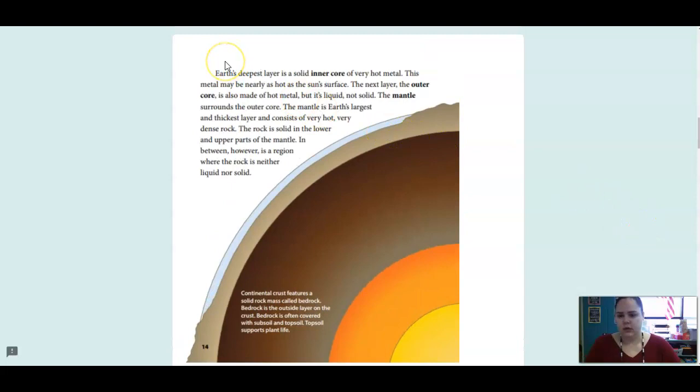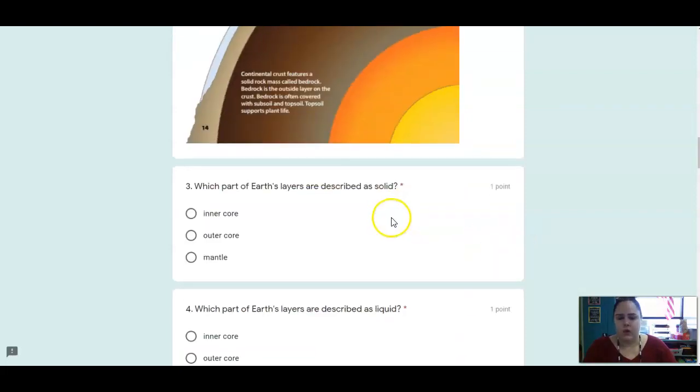All right, here's our second part of our close reading. Earth's deepest layer is a solid inner core with very hot metal. This metal may be nearly as hot as the sun's surface. The next layer, the outer core, is also made of hot metal, but it's liquid, not solid. The mantle surrounds the outer core. The mantle is Earth's largest and thickest layer and consists of very hot, very dense rock. The rock is solid in the lower and upper parts of the mantle. In between, however, is a region where the rock is neither solid nor liquid.